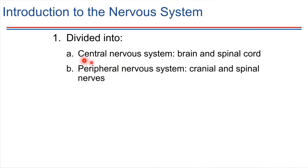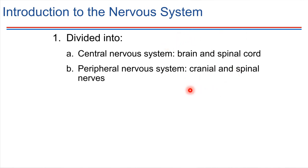Peripheral means kind of off to the side, and that fits with where this is located. The peripheral nervous system includes the nerves that branch off from the central nervous system, and then these would go and permeate throughout the rest of the body.